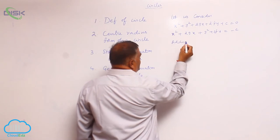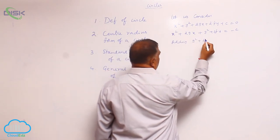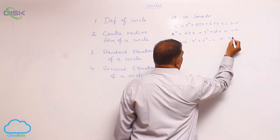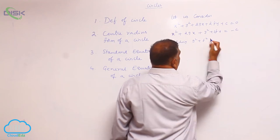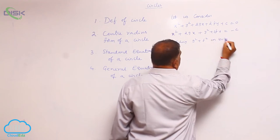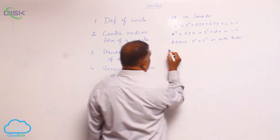Adding g square plus f square minus c on both sides. What do you get now?